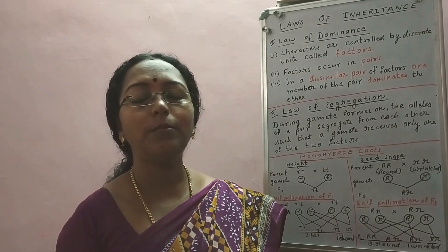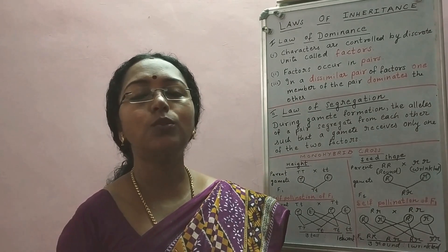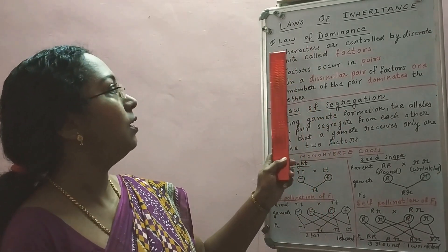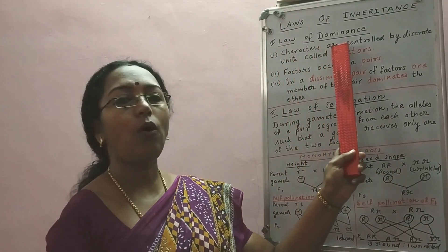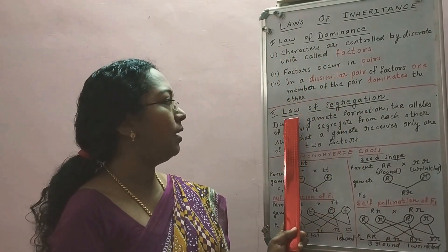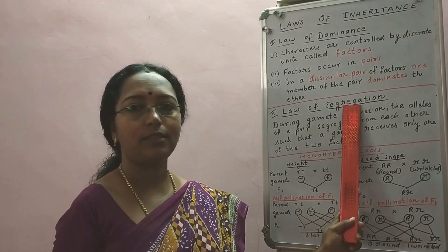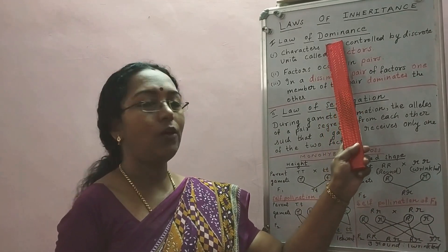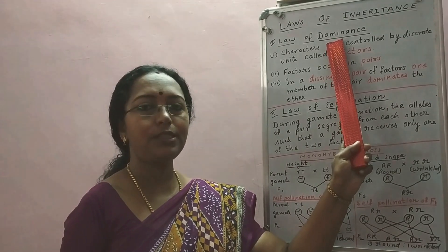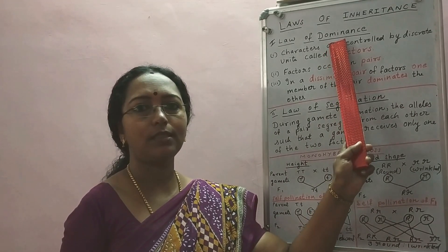Based on monohybrid cross, Mendel proposed two laws of inheritance. Those were the law of dominance and the law of segregation. I hope you remember the term dominance that I mentioned in the previous video.